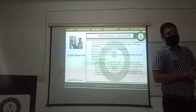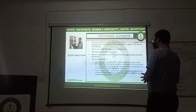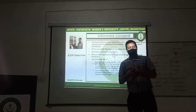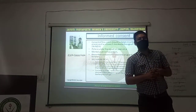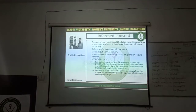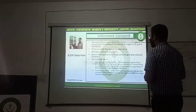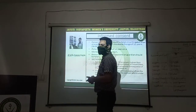Section 90 IPC specifies when the written consent of the parent or guardian can be taken — in two types of cases: first, when the consent is given by a person who is unsound of mind or who is intoxicated by a drug and is unable to understand the nature and consequences for which he is giving consent; and second, in case of a child who is below 12 years of age. In these two cases, consent of the parent or guardian should be taken.